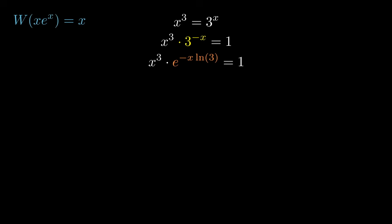So we have x cubed e to the minus x natural log 3. So we're getting a little closer. Let's get even closer by taking the cube root of both sides. That will get rid of the x cubed. Using properties of exponents, we'll have to divide by 3 in the exponent. And fortunately, on the right, the cube root of 1 is 1.